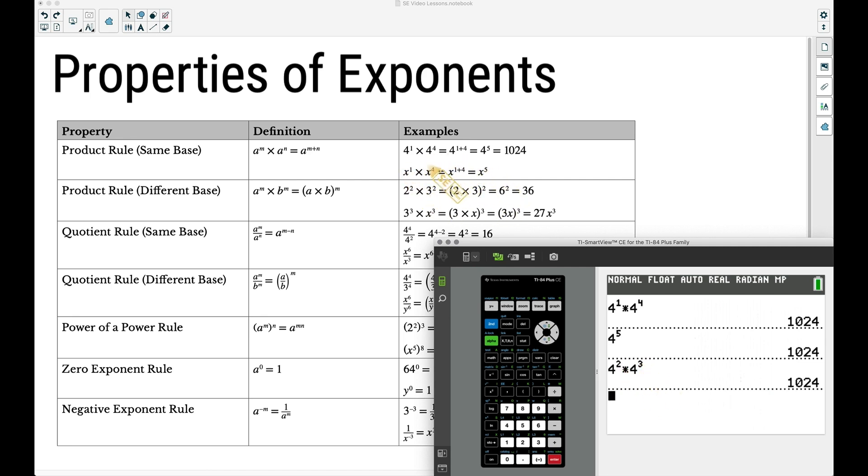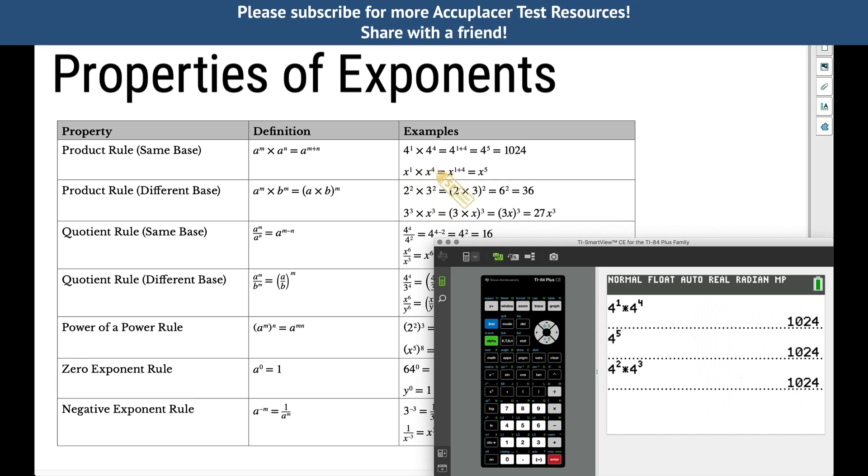In general, what this means is, as long as we have the same bases, regardless of what that number is, some arbitrary number we call x, x to the first times x to the fourth, we can write a single base of x and add our exponents. In this case, we would get x to the fifth.